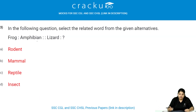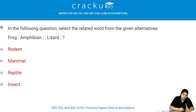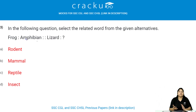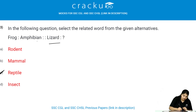In the following question, select the related word from the given alternatives. Frog is to amphibian — then what is lizard? Frog is an amphibian, a species that can live in both water and land. Similarly, lizard is a species that comes under reptiles. Therefore, the answer is option C — reptiles.